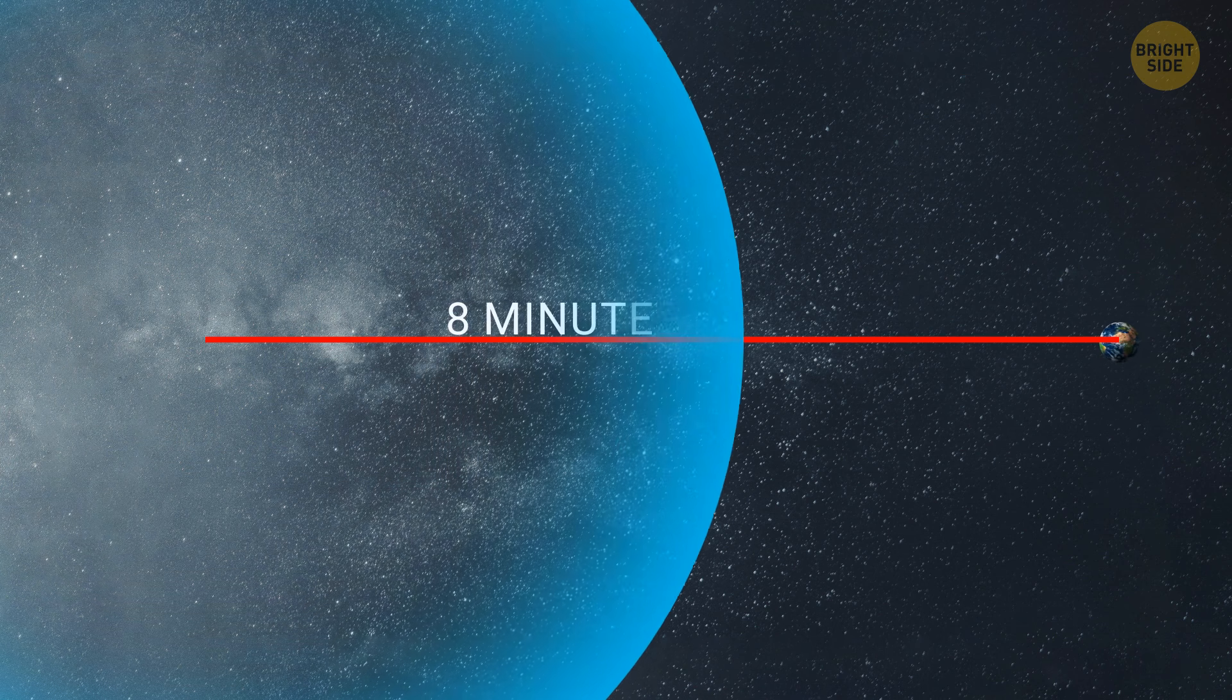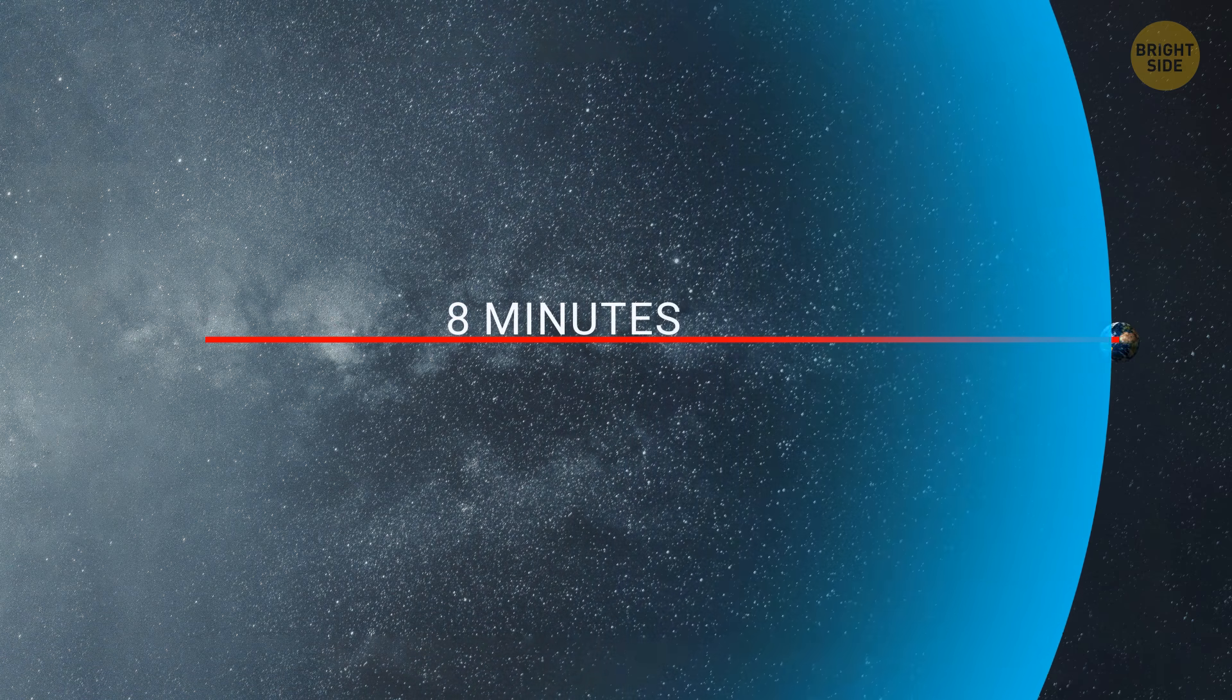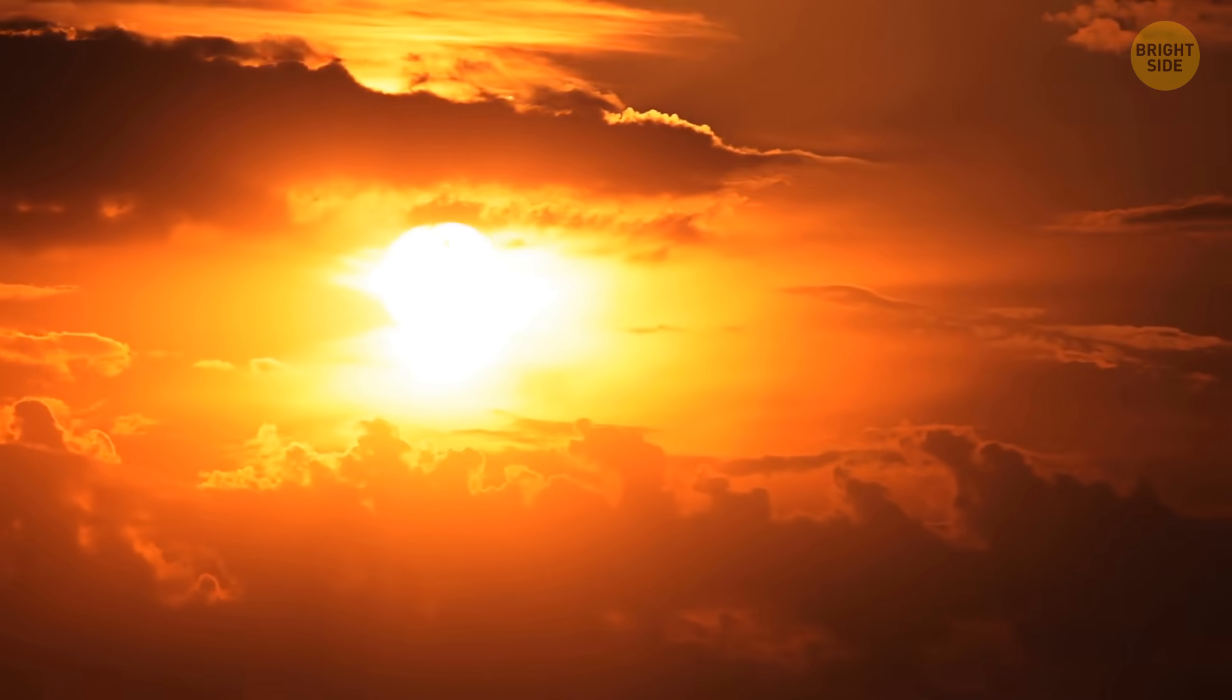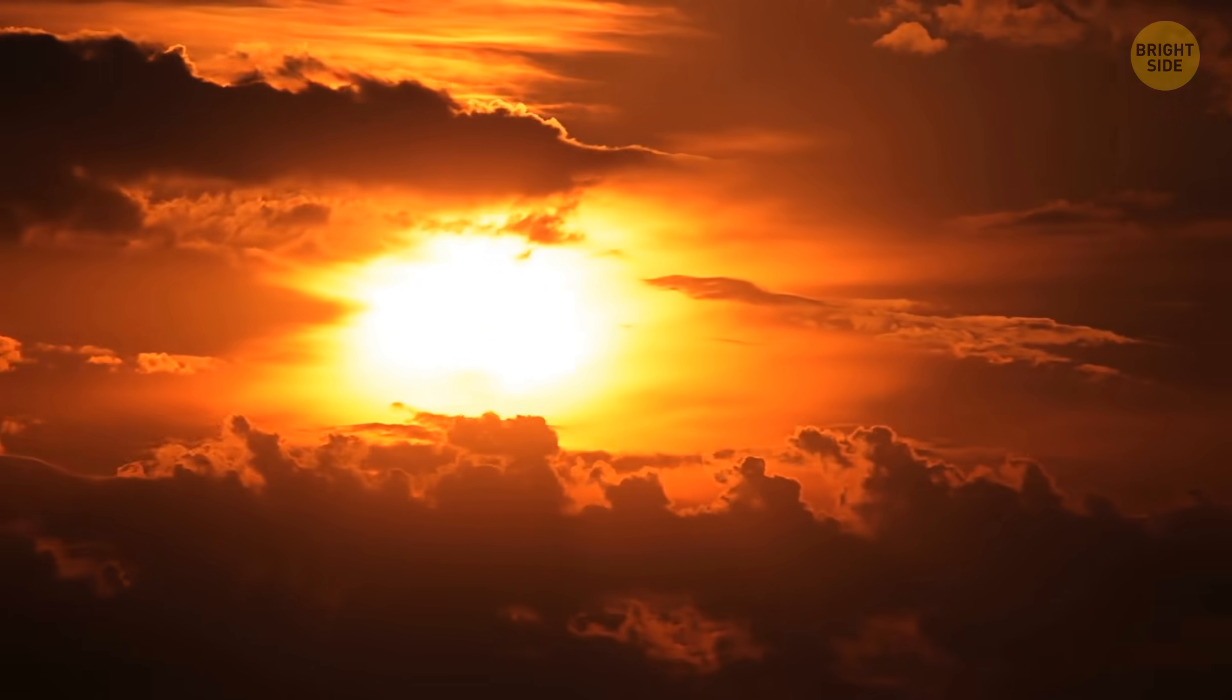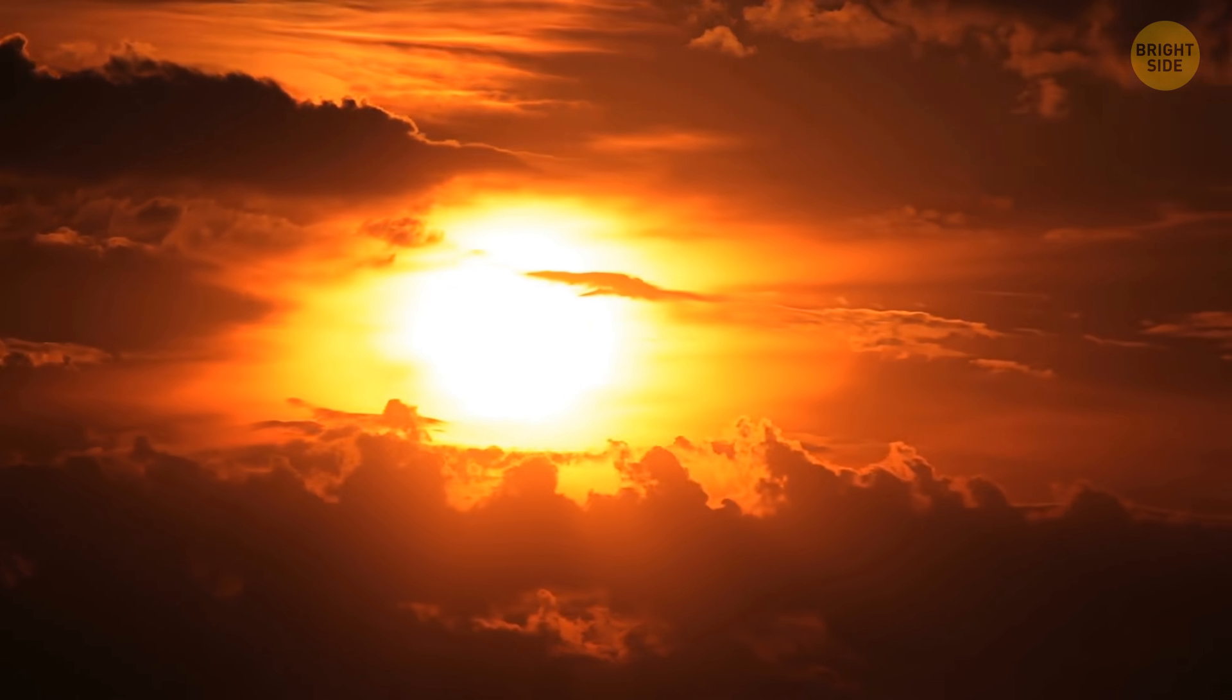Why? Well, the sun is a whopping 93 million miles away from us on average. So it takes a little over 8 minutes and 20 seconds for the sun's light to travel all that distance and reach us.